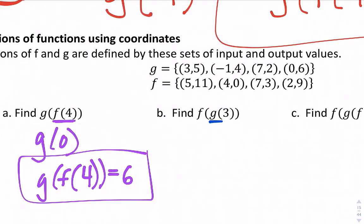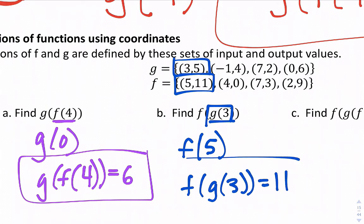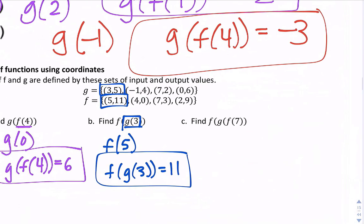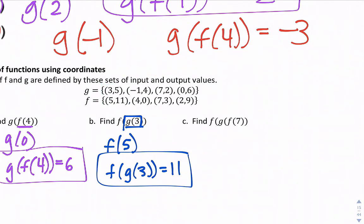Next, f(g(3)): start with g(3), which is 5. Now find f(5), which is 11. So f(g(3)) = 11.